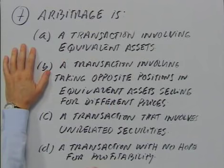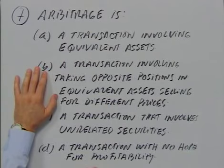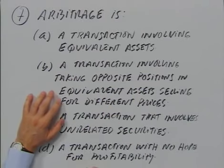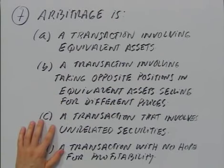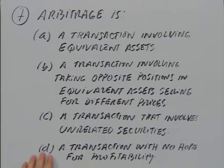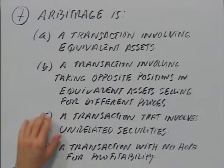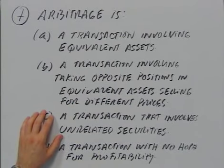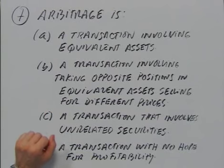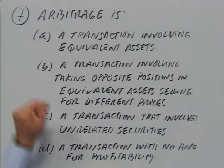Let's define what arbitrage is. Arbitrage is: A, a transaction involving equivalent assets; B, a transaction involving taking opposite positions in equivalent assets selling for different prices; C, a transaction that involves unrelated securities; or D, a transaction with no hope for profitability. Obviously D is wrong — you wouldn't do an arbitrage trade with no hope for profitability. And C is wrong — arbitrage involves the trading of equivalent or related assets. So the question is which between A and B is the answer.